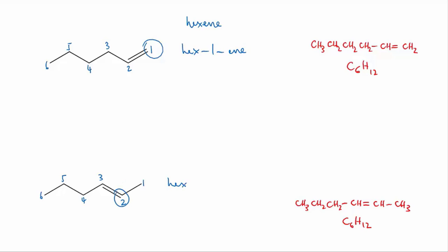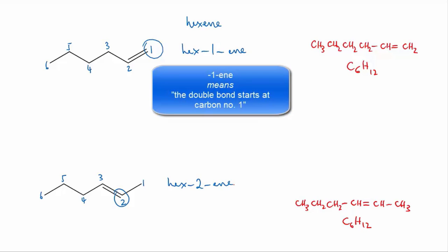The number shows that the thing that comes after it, that is the double bond indicated by the ene, starts at that numbered carbon.